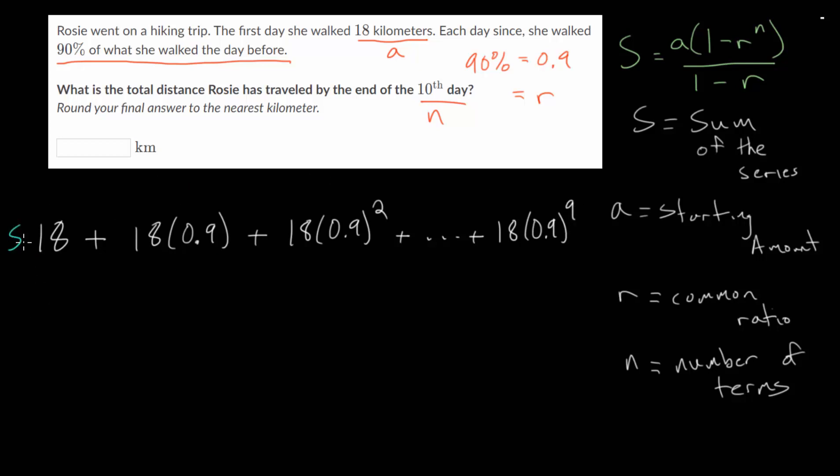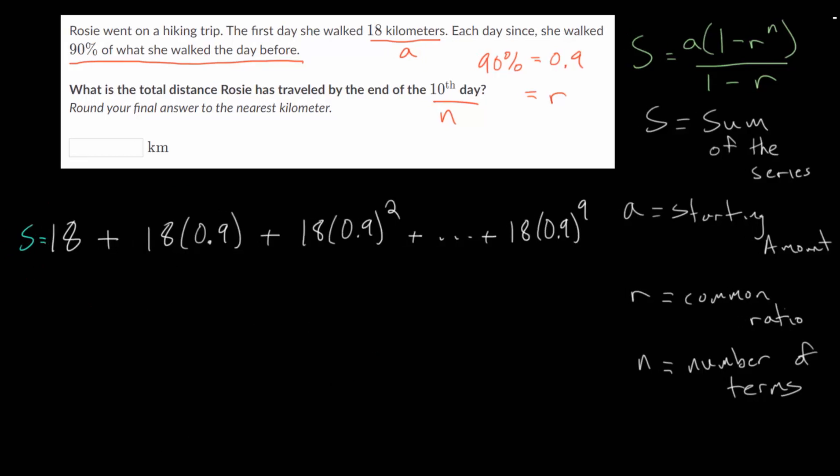This is our sum here. Let me just make a bit more room to the left. And our term number, n, for day 1, she walked 18. Day 2, it was 90% of 18. Day 3 is 18 times 0.9 squared, and so on. So notice that the exponent is always one less than whatever term we're on.